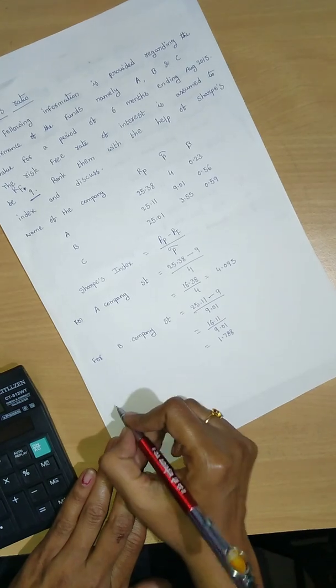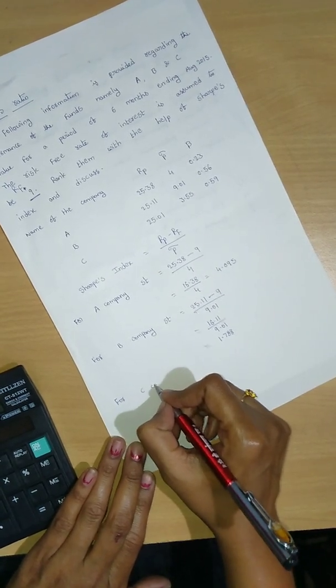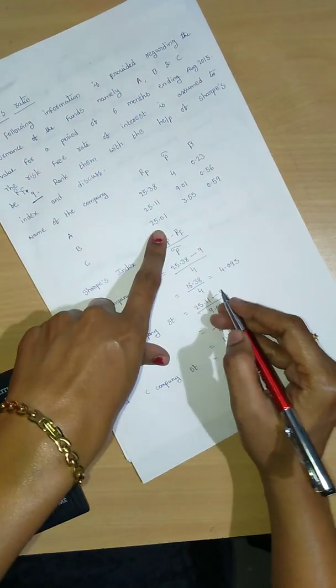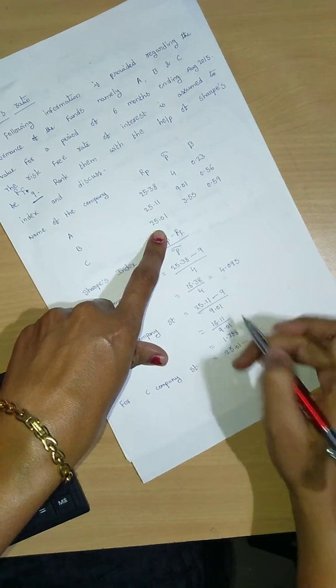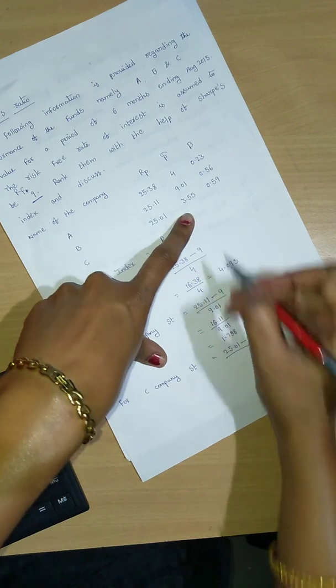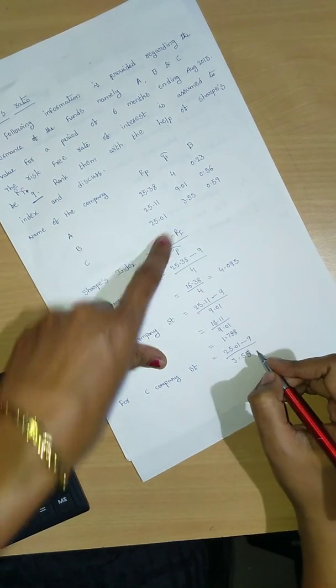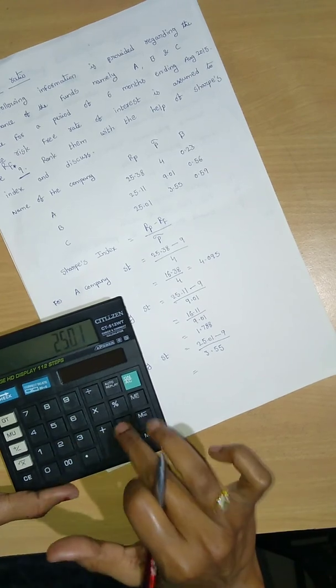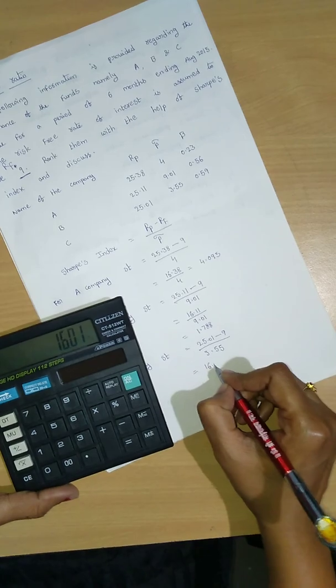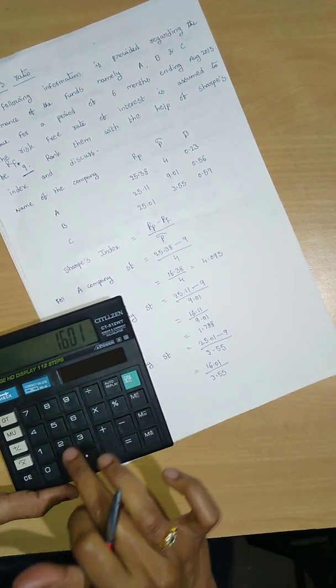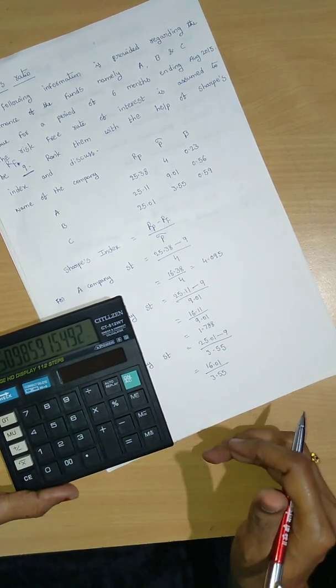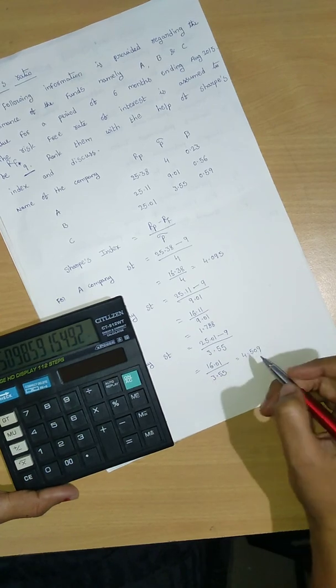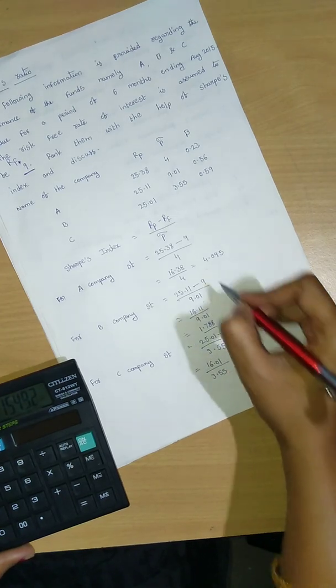And for Company C, Sharpe's ratio equals RP minus RF. RP means 25.01 minus RF, 9, divided by standard deviation 3.55. 25.01 minus 9 equals 16.01 divided by 3.55 equals 4.509. So this is the portfolio measurement.